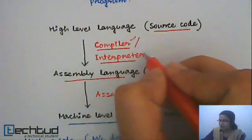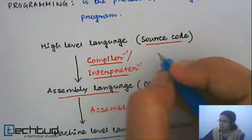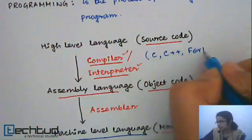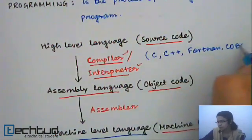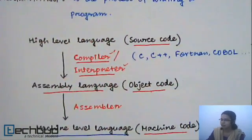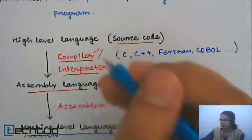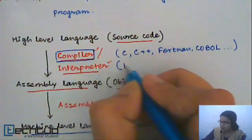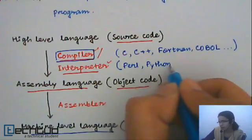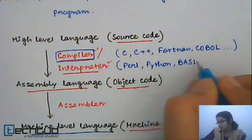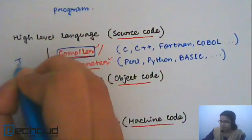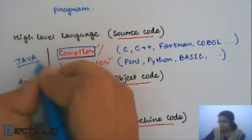Programming languages like C, C++, Fortran, COBOL, etc. use a compiler to convert their source code into machine-level code. A few programming languages like Java use both a compiler and an interpreter.